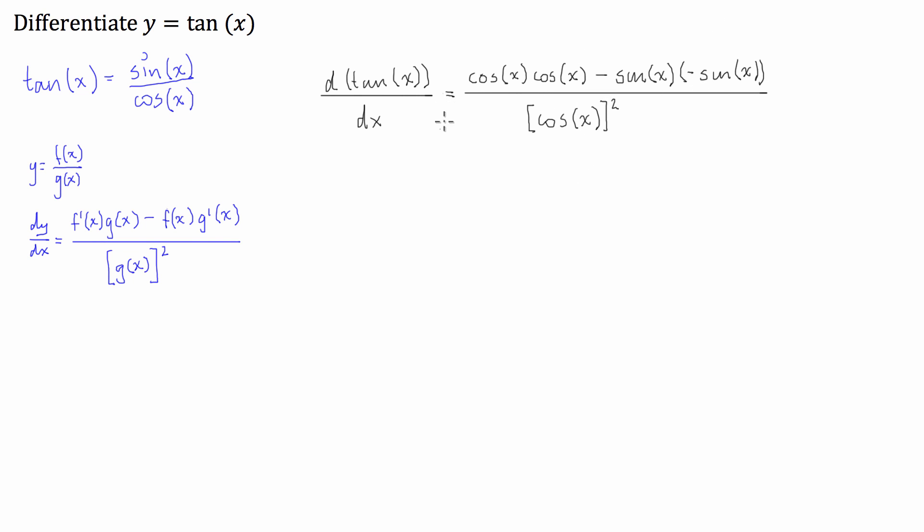So, what we can do is we can go about simplifying this a little bit. So, cos of x times the cos of x is cos squared x. And here we have sine of x times the negative sine of x. And this is also a minus. So, that's going to be plus sine squared of x, all divided by the cosine squared of x.